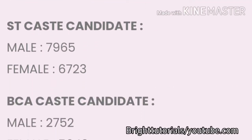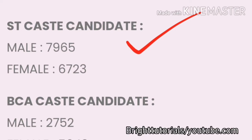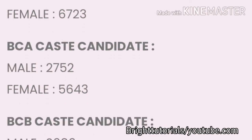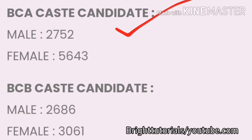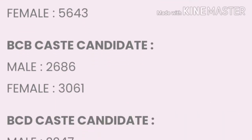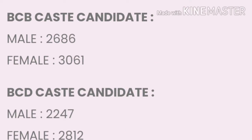For ST caste in EEE: male cutoff is 7965 and female cutoff is 6723. For BCA caste: male cutoff is 2752 and female cutoff is 5643. For BCB caste: male cutoff is 2686 and female cutoff is 3061.